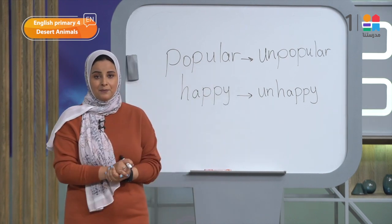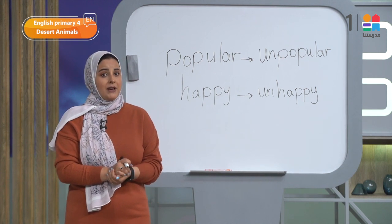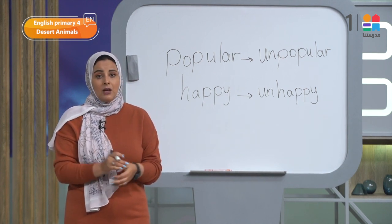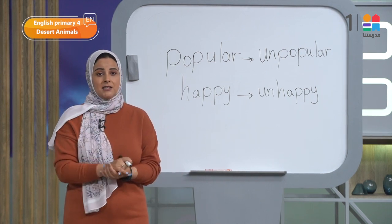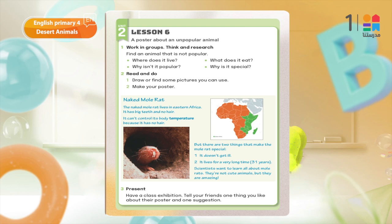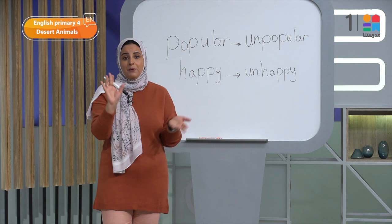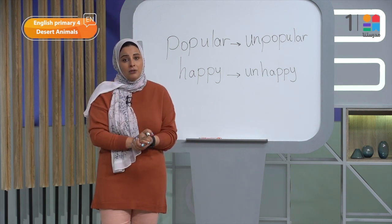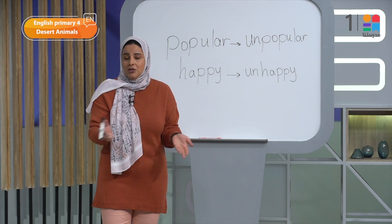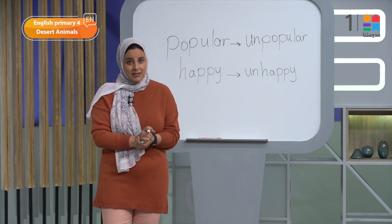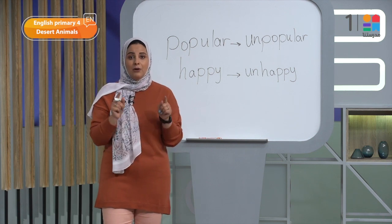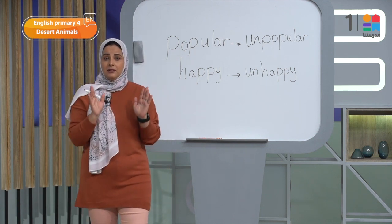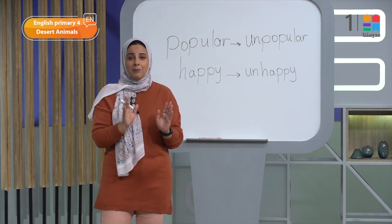Do you know some unpopular animals? Why do you think they are unpopular? Rats, for example, because they are ugly. Crocodiles, because they are dangerous. Snakes, because they are scary. Well done. Now please get ready to make a poster about an unpopular animal. Find an animal that is not popular. Try to answer the following questions using reference books or by asking your classmates.